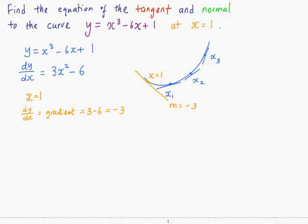So if you know the gradient, how do you find the equation of this orange line? As you learned from the previous slides, you need to know the coordinates of the point that the line passes through.